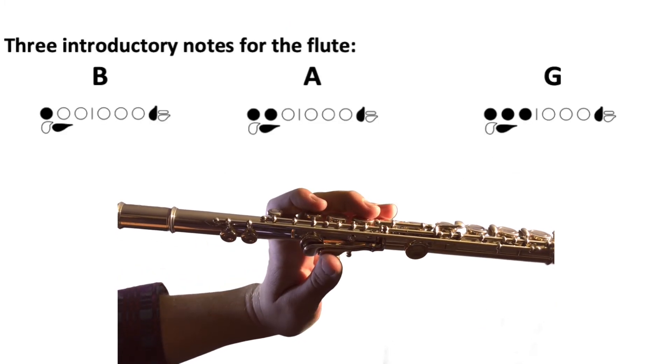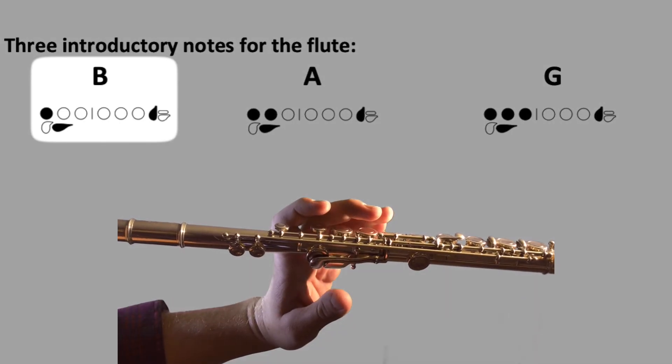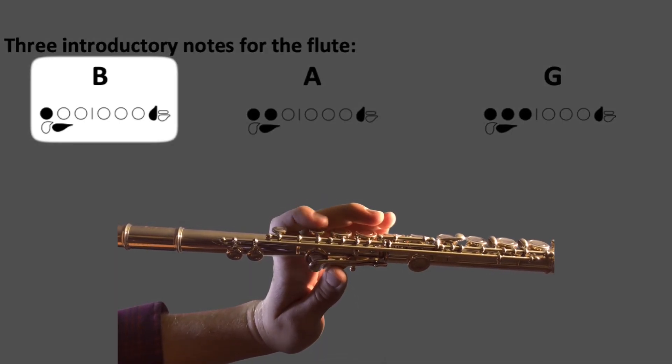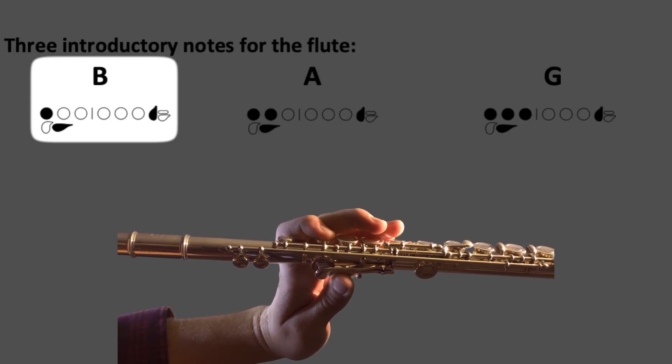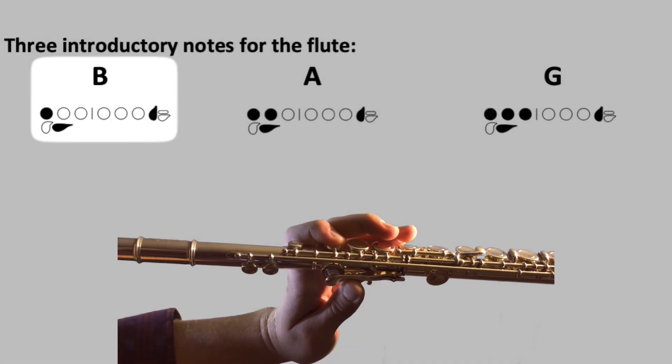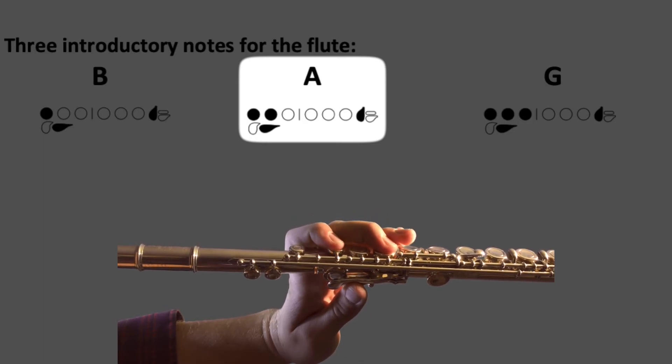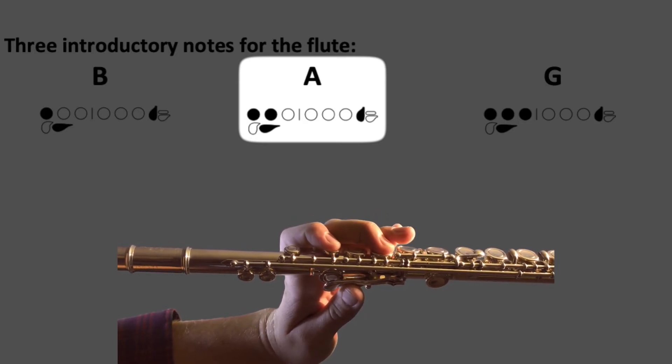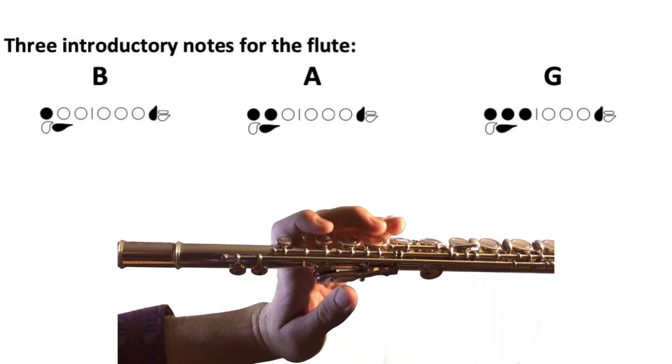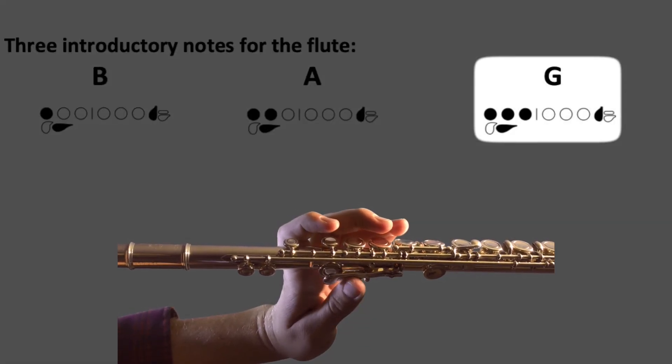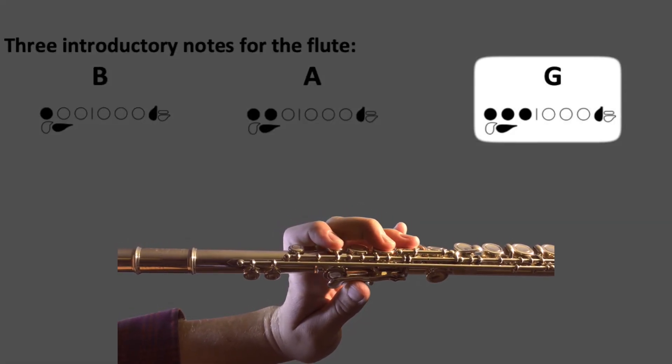The left hand will finger the correct notes. B is thumb and first finger, A is thumb, first and second finger, and G is thumb, first, second, and third fingers.